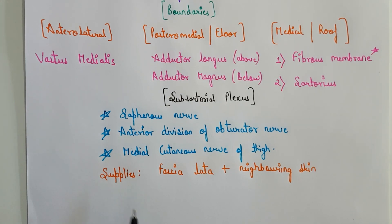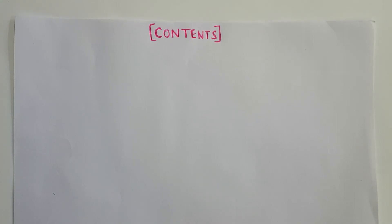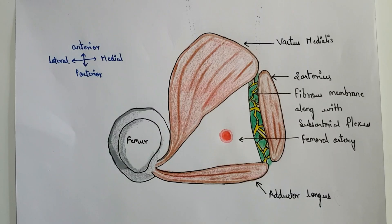The subsartorial plexus supplies the fascia lata and the neighboring skin along the fascia lata. Now let us look at the contents of the adductor canal. There are a total of five structures included in the adductor canal. The first is the femoral artery, along with its muscular and descending genicular branches.